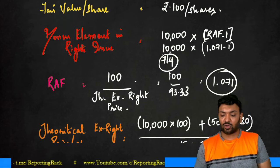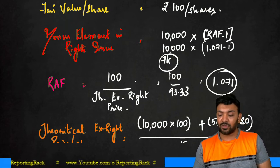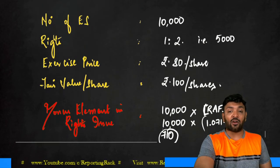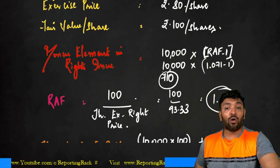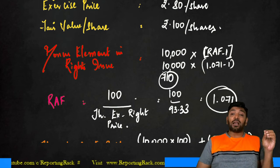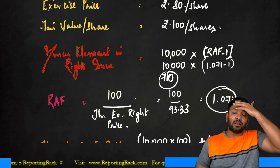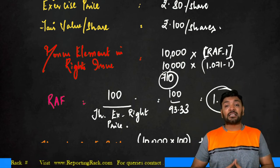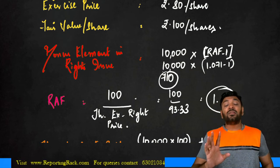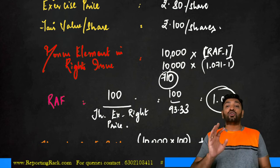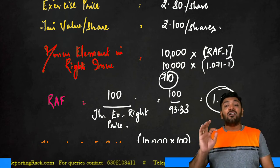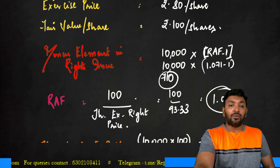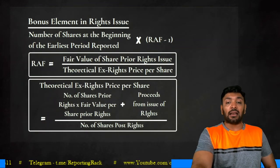Bonus element in rights issue = 10,000 × (1.071 − 1) = approximately 710 shares. So out of 5,000 right shares, 710 shares are bonus shares — these are treated as if issued at the beginning of the earliest period reported. The remaining 4,290 shares are full consideration shares, while the 710 are zero consideration (bonus) shares.